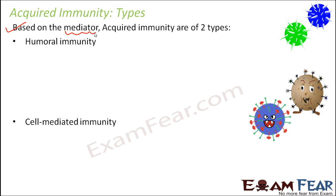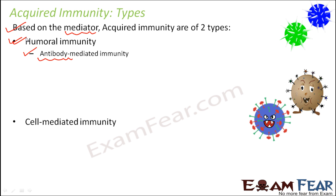Now we saw that there were two types of cells involved in the process of immune response. One is the B cells and the other is the T cells. The type of immunity which is mediated by antibody — that is, which is all controlled by antibody production — whenever antibody production comes into picture, it is the B lymphocytes that play a role. So this type of immunity is called humoral immunity.